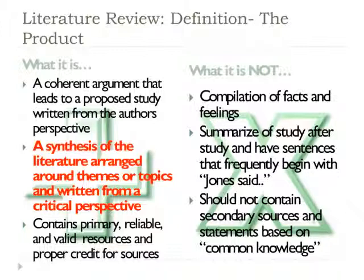Finally, and we didn't discuss this but it's worth mentioning: a literature review does not contain secondary sources — you use primary sources. And also, it's not based on common knowledge. What I mean by that is, let's take divorce as an example. Oftentimes I will hear people say 'the divorce rate is increasing.' That's common knowledge. However, that common knowledge is not accurate. Actually, if you look at the current research, the divorce rate is actually decreasing.